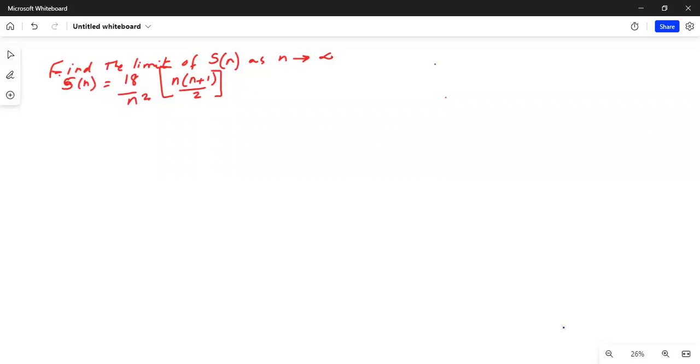Find the limit of sum S(N) as N tends to infinity. S is a function of N equal to 18 over N squared, multiplied by, in parenthesis, N times N plus 1 divided by 2, close parenthesis.